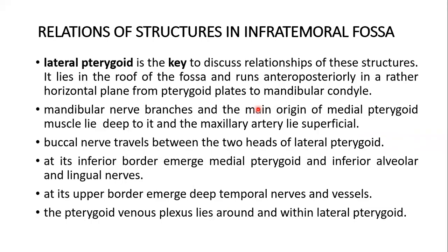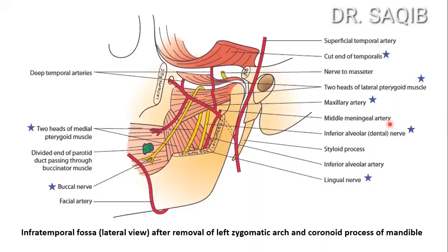The relations of structures in the infratemporal fossa are described in relation to the lateral pterygoid muscle, which is the key to discussing relationships. It lies in the roof of the fossa and runs anteroposteriorly in a rather horizontal plane from the pterygoid plates to the mandibular condyle.